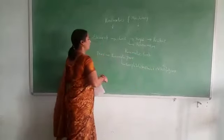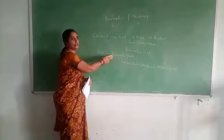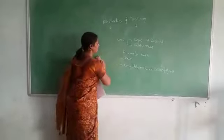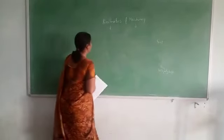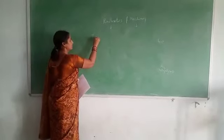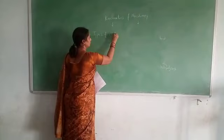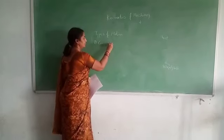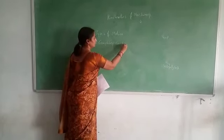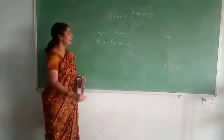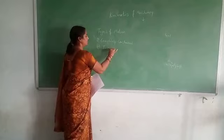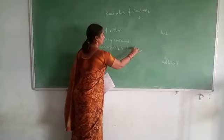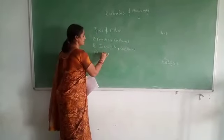Here we discuss the different types of motion, to understand whether the pair of elements are following their particular motion or not. The first type is completely constrained, the second is incompletely constrained, and the third is successfully constrained.